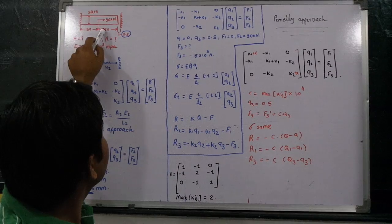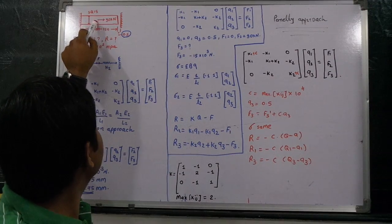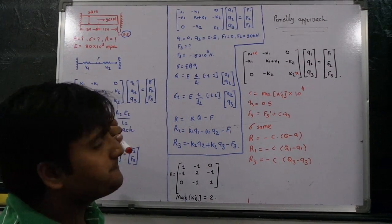The area is given as 15 millimeter square and 150 millimeter square, with 150 length. After 150 length, 90 kilonewton load is acting on the body.